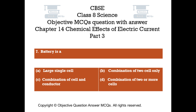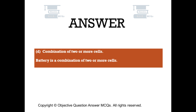The right answer is Option D: Combination of two or more cells. A battery is a combination of two or more cells.